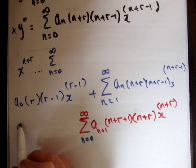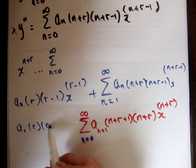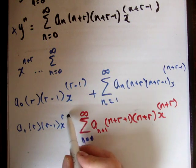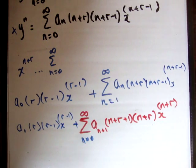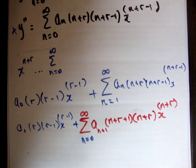So what we now have is a n times r, r minus 1, x to the r minus 1, plus this. That now is equal to y double prime.